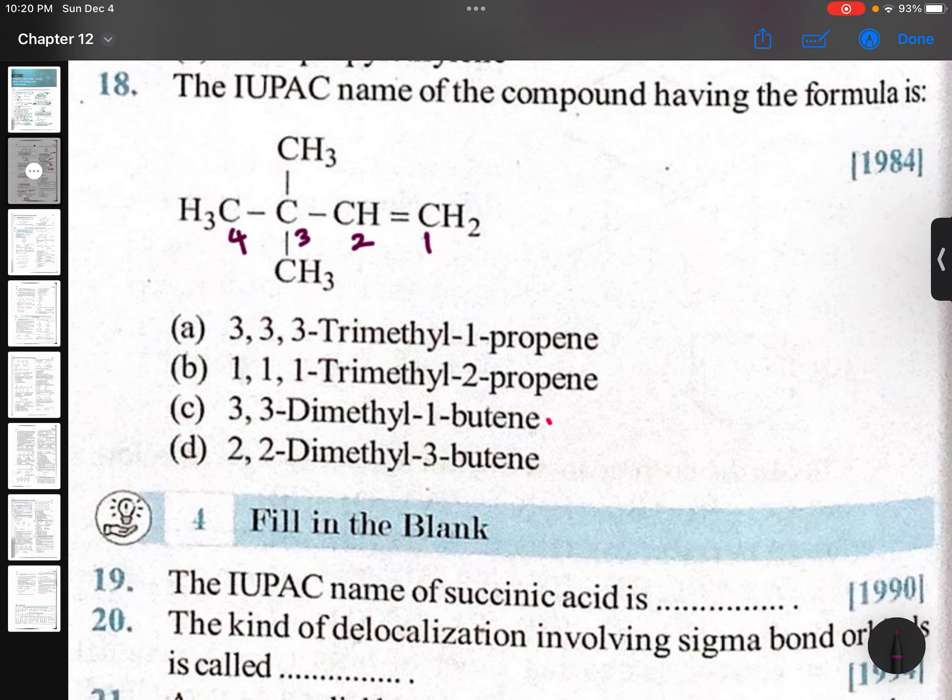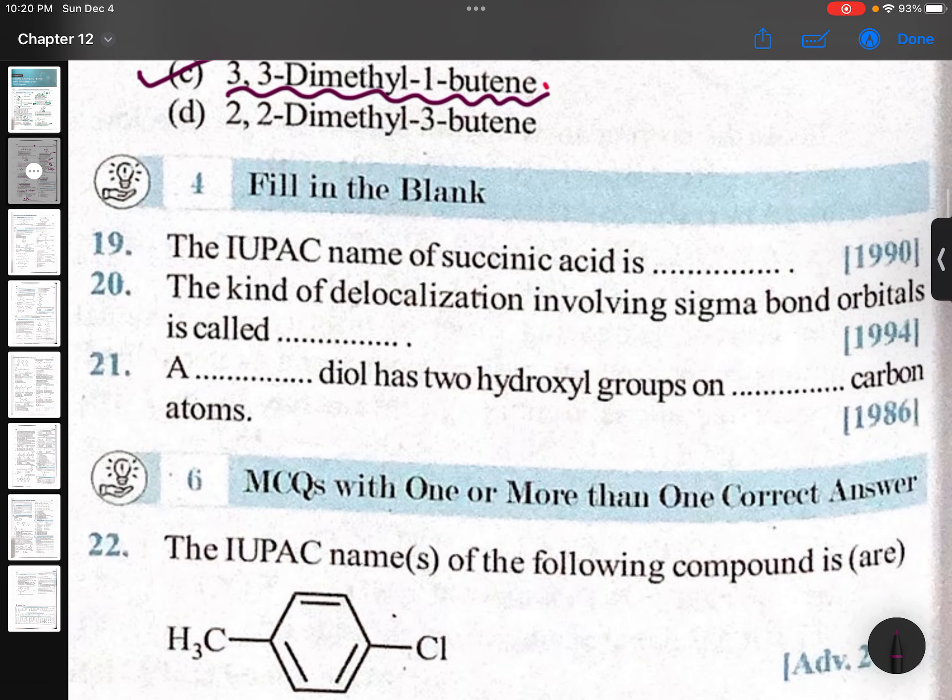IUPAC name of succinic acid. Succinic acid is CH2-CH2-COOH-COOH. Butane-1,4-dioic acid.